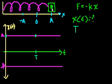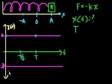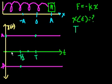If it takes T seconds to go there and back, it takes T over 2 seconds to reach the other end. The same amount of time it takes to get there is also the same amount of time it takes to get back. So at T over 2, the block will have compressed all the way to the other side, so it'll be at negative A. And then at the points in between, it will be at x equals 0.